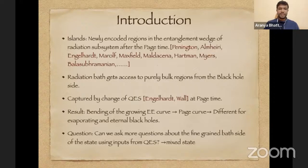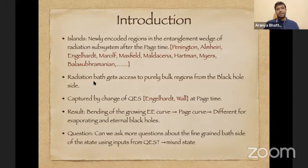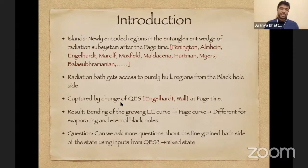We have already heard a couple of talks on islands in the previous two days. Islands are newly encoded regions in the entanglement wedge of the radiation subsystem after the page time. This result is due to the work of several authors. The radiation bath — especially in these papers, a non-gravitational radiation bath — gets access to purely bulk regions from the black hole side starting from the page time. This change of minimal surface is captured by the quantum extremal surface, put forward by Engelhardt and Wall.